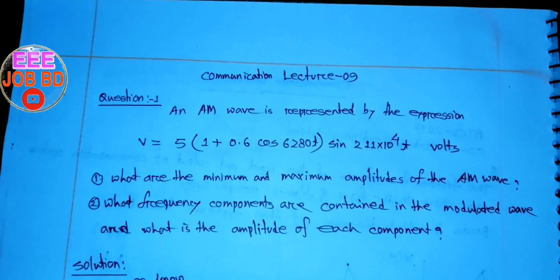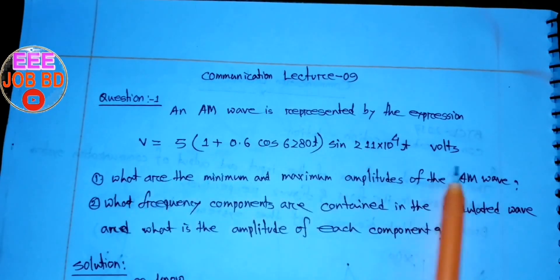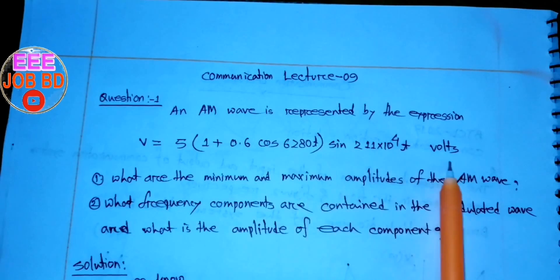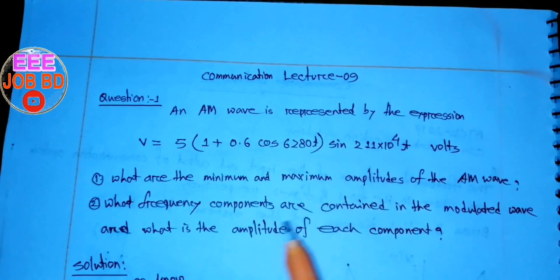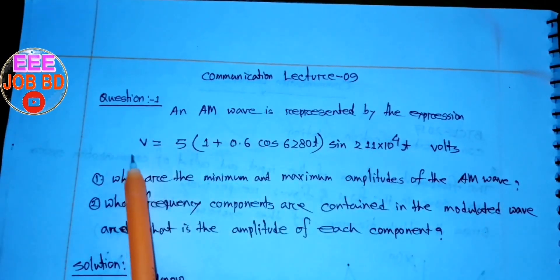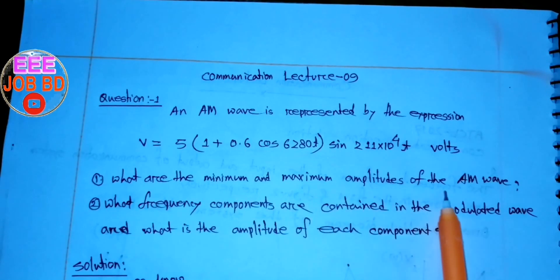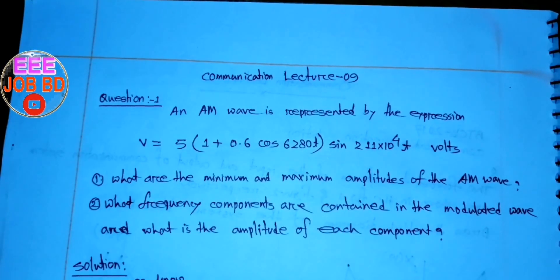Question number 1: An MOF is represented by the equation. The equation is the modulator wave and the main equation. What are the minimum and maximum amplitude of the MOF?